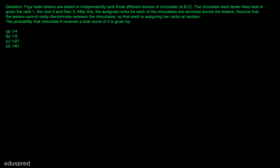In this video, I am going to solve this question. Four taste testers are asked to independently rank three different brands of chocolate, A, B and C. The chocolate each tester likes best is given the rank 1, the next 2 and then 3. After this, the assigned ranks for each of the chocolates are summed across the testers. Assume that the testers cannot really discriminate between the chocolates so that each is assigning her ranks at random. We have to find the probability that chocolate A receives a total score of 4.